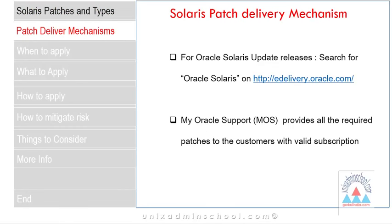How does Oracle deliver these patches to customers? One way is by providing Solaris update releases from the site edelivery.oracle.com, and the other way is by providing patches from the My Oracle Support website. Customers who have an active subscription can go there and download the patches for their systems.